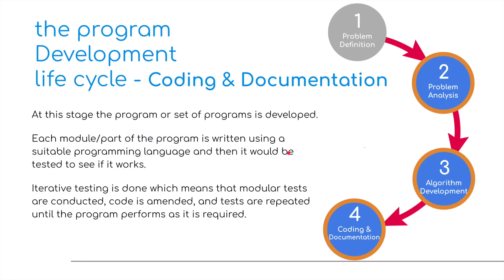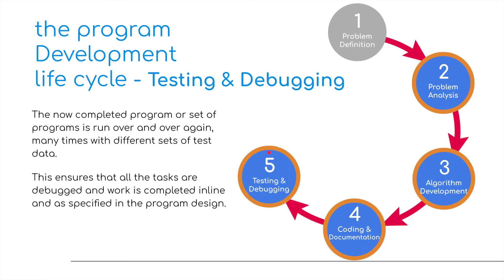Once we've got a basic structure of what the program is going to look like, we can then move on to the coding and the documentation. At this stage a program or set of programs is developed. Each module or part of the program is written using a suitable programming language and then it will be tested to see if it works. Iterative testing is done, which means that modular tests are conducted, code is amended and tests are repeated until the program performs as required. We then move on to testing and debugging — the now completed program is run many times with different sets of test data to ensure that all the tasks are debugged and work is completed in line with what is specified in the program design.